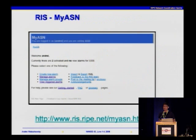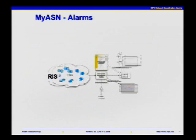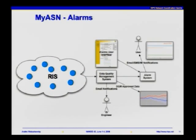One of the tools we built using RIS data is the so-called MySense service. It actually allows you to monitor different things happening in routing with regards to your AS. Some of those things are similar to what was presented for Cyclops, which we just heard. The idea is simple: MySense allows you to specify certain conditions — filters — and RIS data will be filtered. If those conditions are matched, you as a MySense user will be notified.